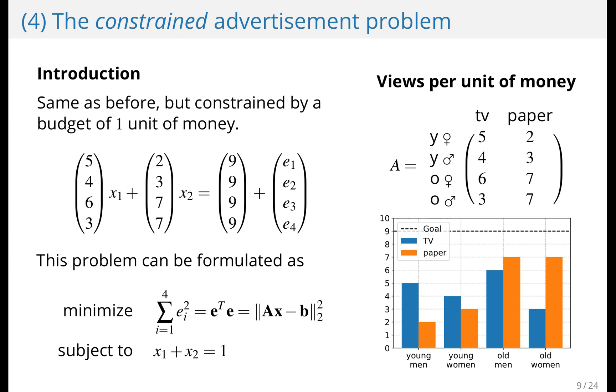The constraint advertisement problem. This is identical to before with the exception of an additional constraint. We now only have one unit of money to spend in total. So same problem, but there's a constraint on money. So it's more realistic.